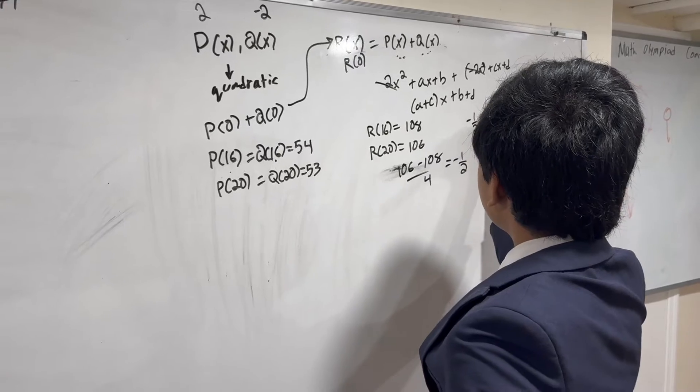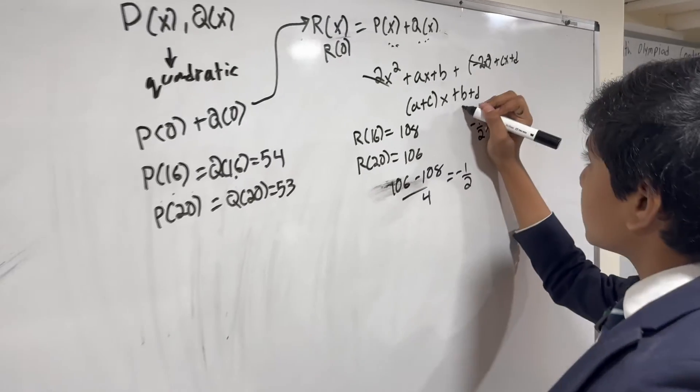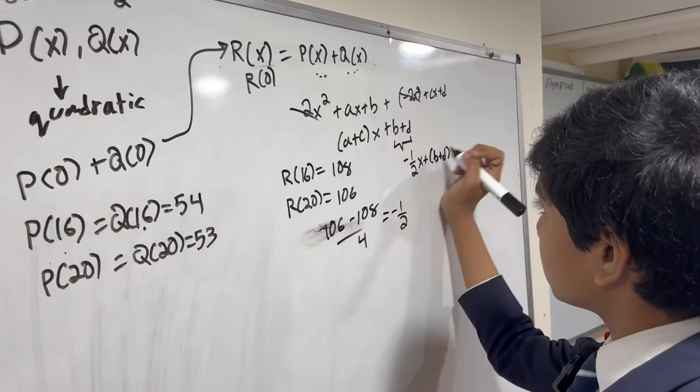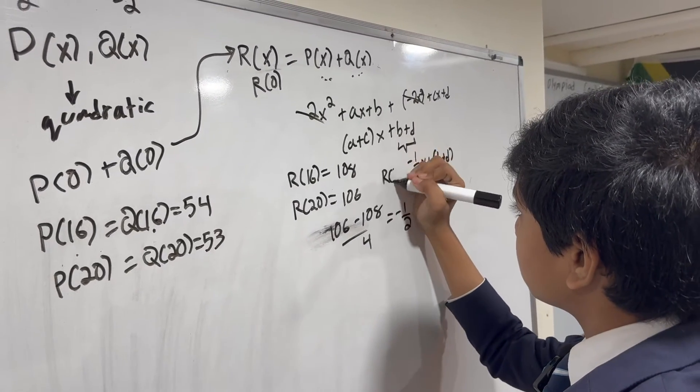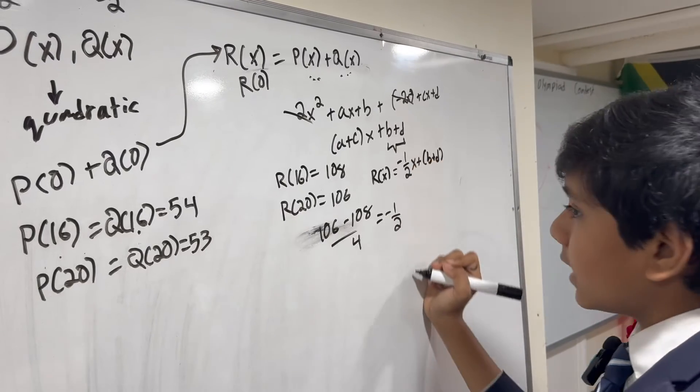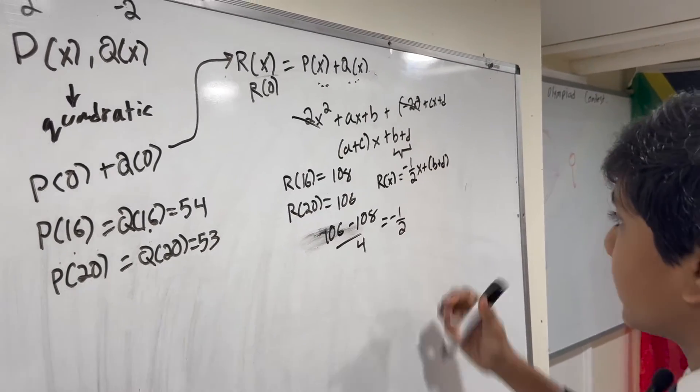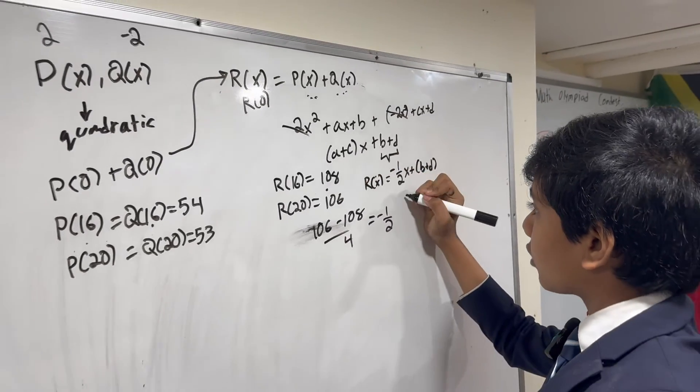So, we have minus 1 half x plus whatever this constant term is. And now, all we have to do is just do the same thing again. We plug in R of 16.